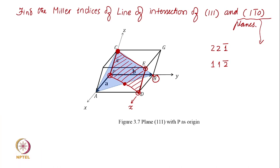Two points are sufficient to define my line of intersection. So I get my line of intersection as the line going from C to this. This becomes my line of intersection. Geometrically I have found it. All I have to do now is to find its Miller indices.